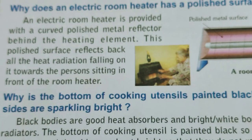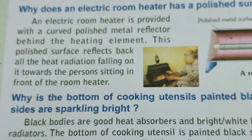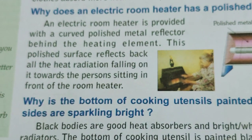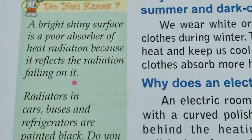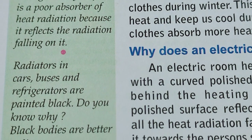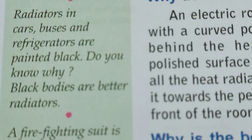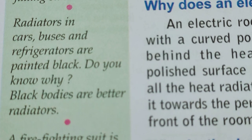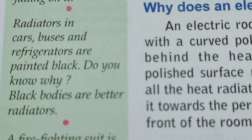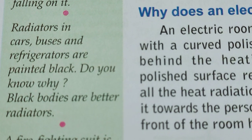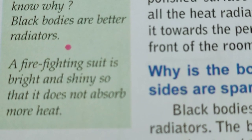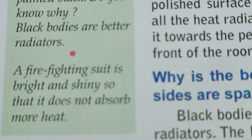Black-colored or dark-colored bodies are better heat absorbers and better heat radiators than white-colored or light-colored bodies. A bright shiny surface is a poor absorber of radiation because it reflects the radiation falling on it. That is why radiators in cars, buses, and refrigerators are painted black — because these machines get heated up while working and heat has to be radiated. The firefighting suit of firefighters is bright and shiny so that it does not absorb more heat.